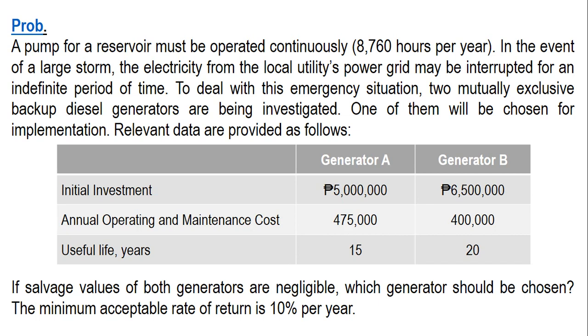If salvage values of both generators are negligible, which generator should be chosen? The minimum acceptable rate of return is 10 percent per year. Now in using the present worth cost method, we need the same study period. Since we have different useful lives, 15 and 20, what we are going to do is find a common number for the two alternatives.